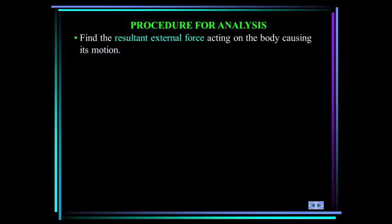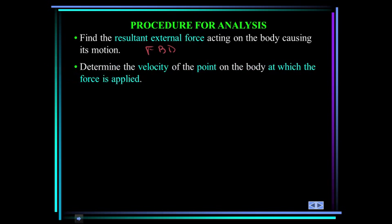So let's define the procedure for analysis. First, find the resultant external forces acting on the body causing its motion. This most likely means a free body diagram. Next, determine the velocity of the point on the body at which the force is applied. Energy methods or the equation of motion and appropriate kinematic relationships may be used.